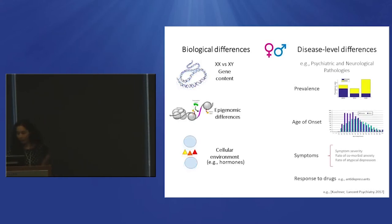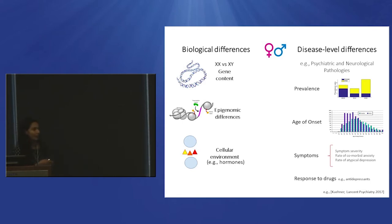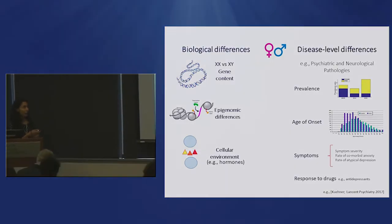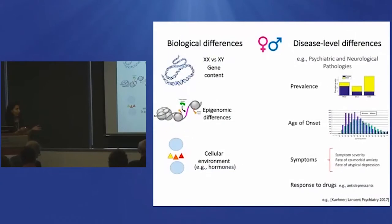On the other hand, we also know that there are major sex biases in a variety of psychiatric and neurological diseases. For example, major depression, which I'll come back to later — we know that it's more prevalent in females at a two-to-one ratio, age of onset is earlier, and symptoms and even drug response to drugs could be different.